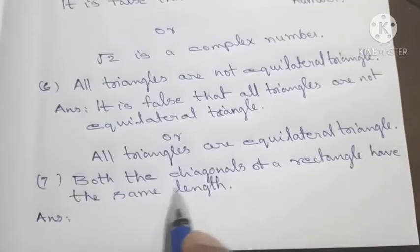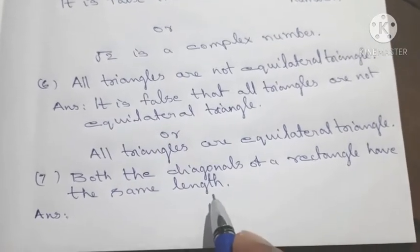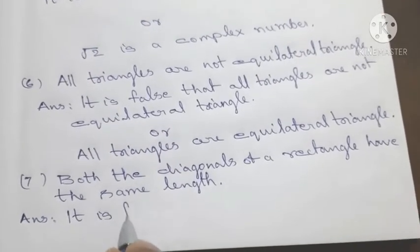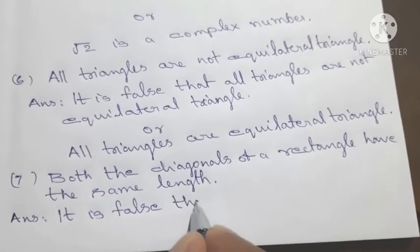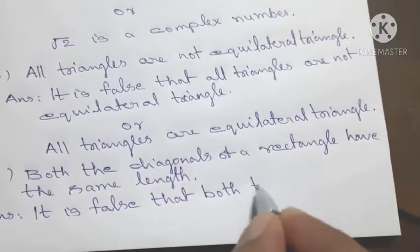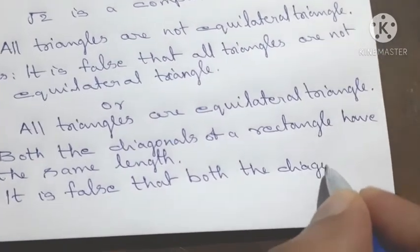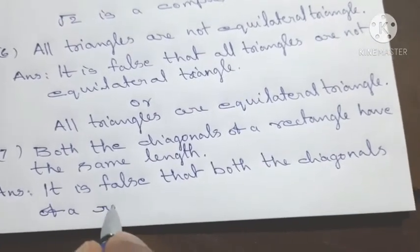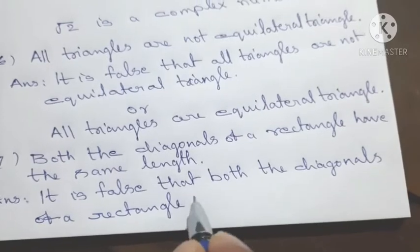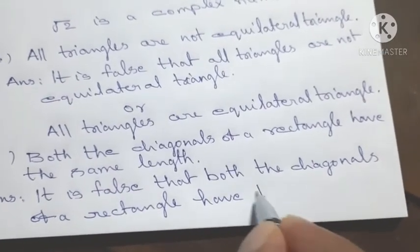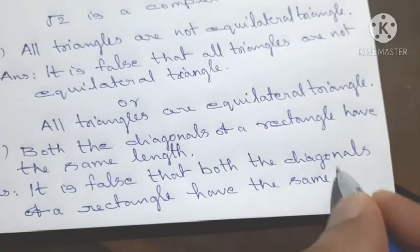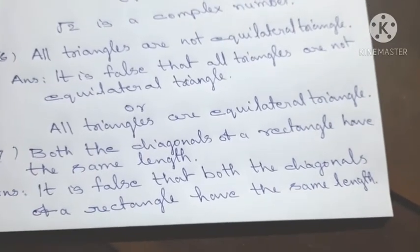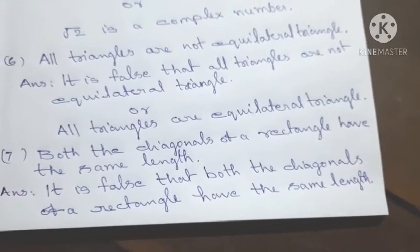All triangles are equal in length. Then the negation: it is false that both the diagonals of a rectangle have the same length. For one statement, the negation is: it is false that both the diagonals of a rectangle have the same length.